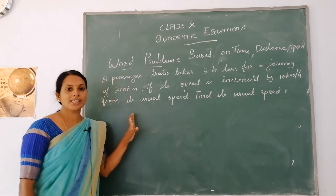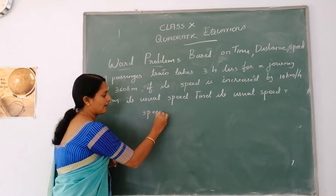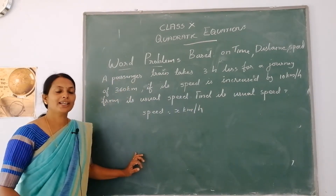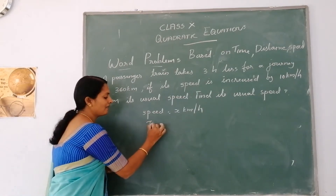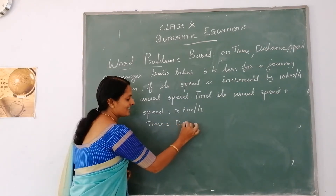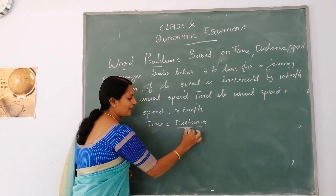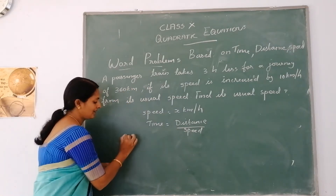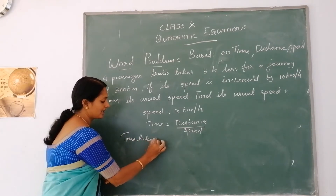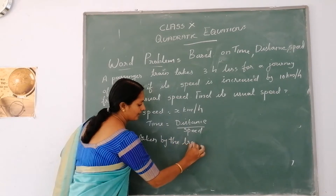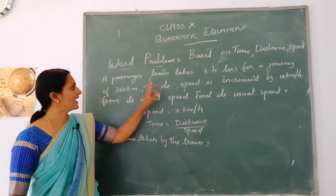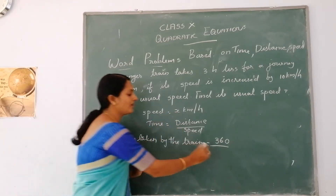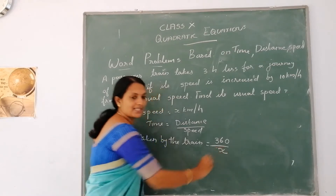We will take that speed is x km per hour. You know that time is equal to distance divided by speed. Therefore, the time taken by the train is 360 divided by x.